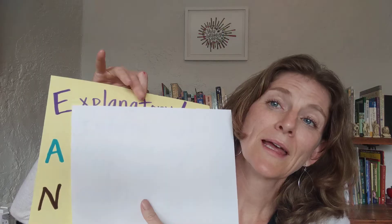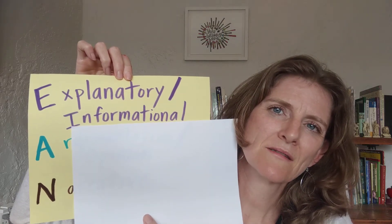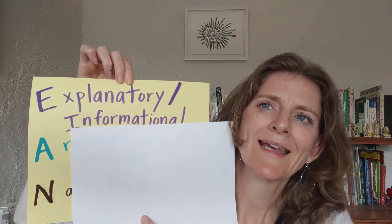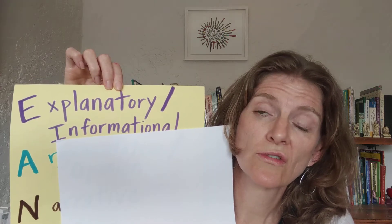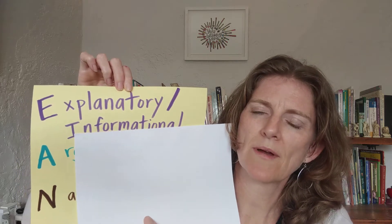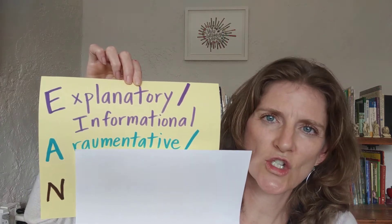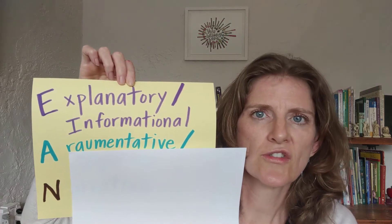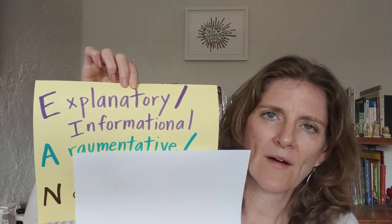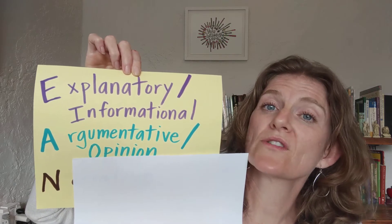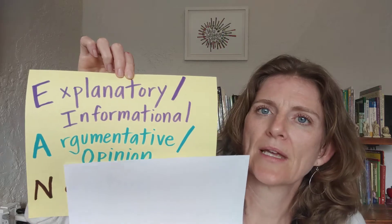There are three different genres in which you may be asked to write. The E is for explanatory, also known as informational — this is where the performance task asks: 'Can you please teach your reader about this topic that you have just read about?' The A stands for argumentative, where the task says: 'Read these sources and then form an opinion — argue, try to persuade your reader about an opinion you have.'